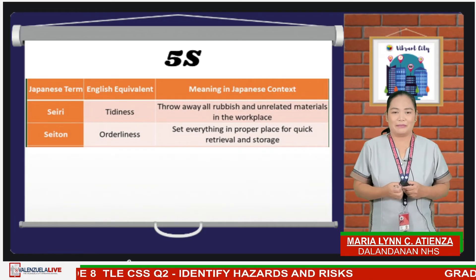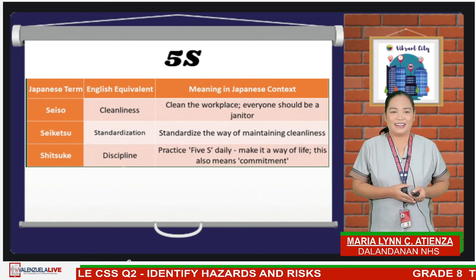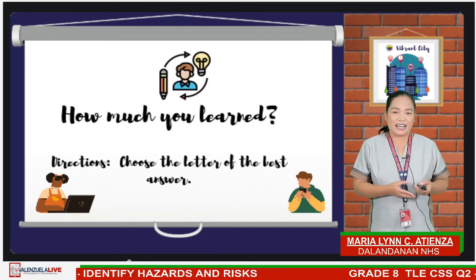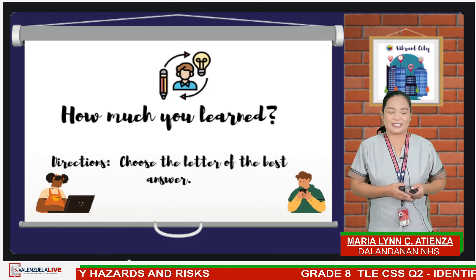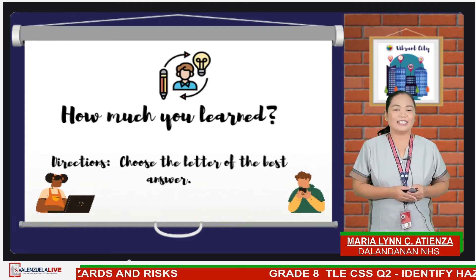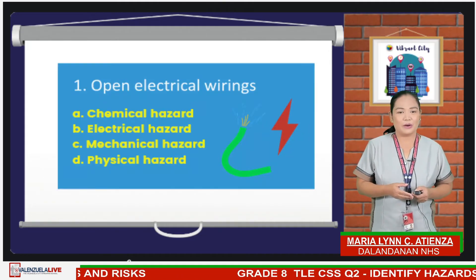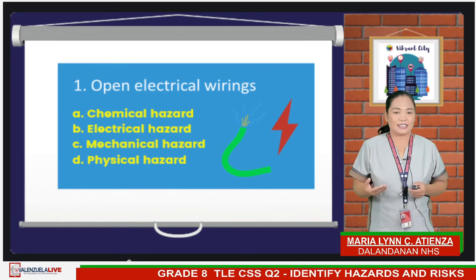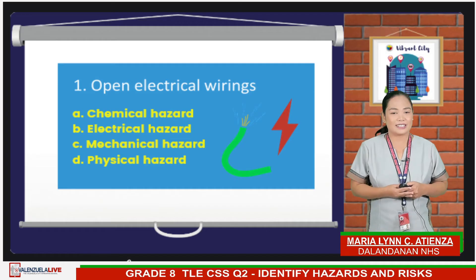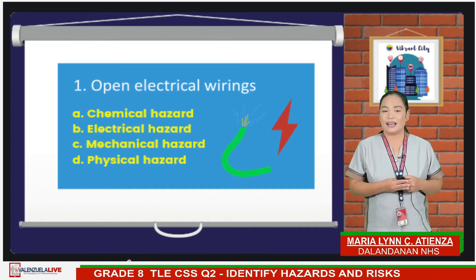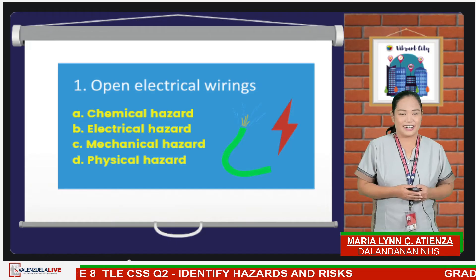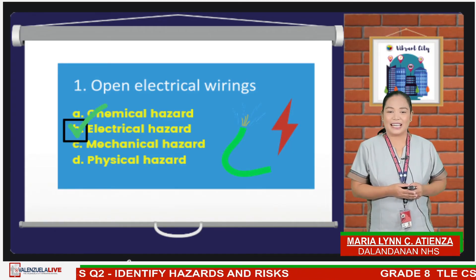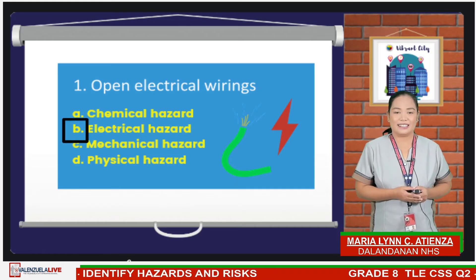Now let's find out how much you learned today. Write your answer in the comment box below. Number 1: open electrical wiring. Is it A, chemical hazard? B, electrical hazard? C, mechanical hazard? Or D, physical hazard? The answer is electrical hazard. Number 2: laser printer toner or ink? The answer is chemical hazard.